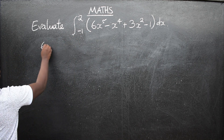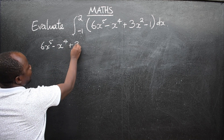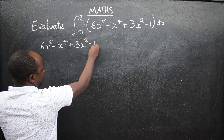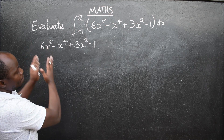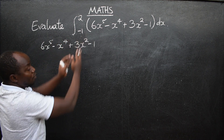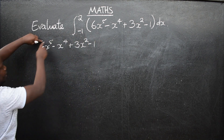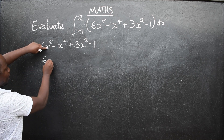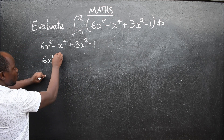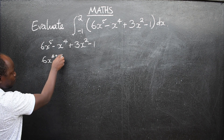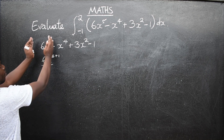We have 6x to the power 5, minus x to the power 4, plus 3x squared, minus 1. When integrating, we add 1 to the power, then divide by the result. So for 6x⁵: add 1 to get power 6, divide by 6. That gives us x to the power 6 — the 6 and 6 cancel.